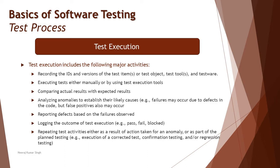During defect reporting, we need to make sure we capture all the relevant information to be passed on to the stakeholders who will resolve the defects - generally the developers who built the application we are testing. At this point, we build up all that information along with the defect report to tell them: this is what the problem is, this is what we performed as a test step, this is what happened, and this is not meeting the expectations or requirements.